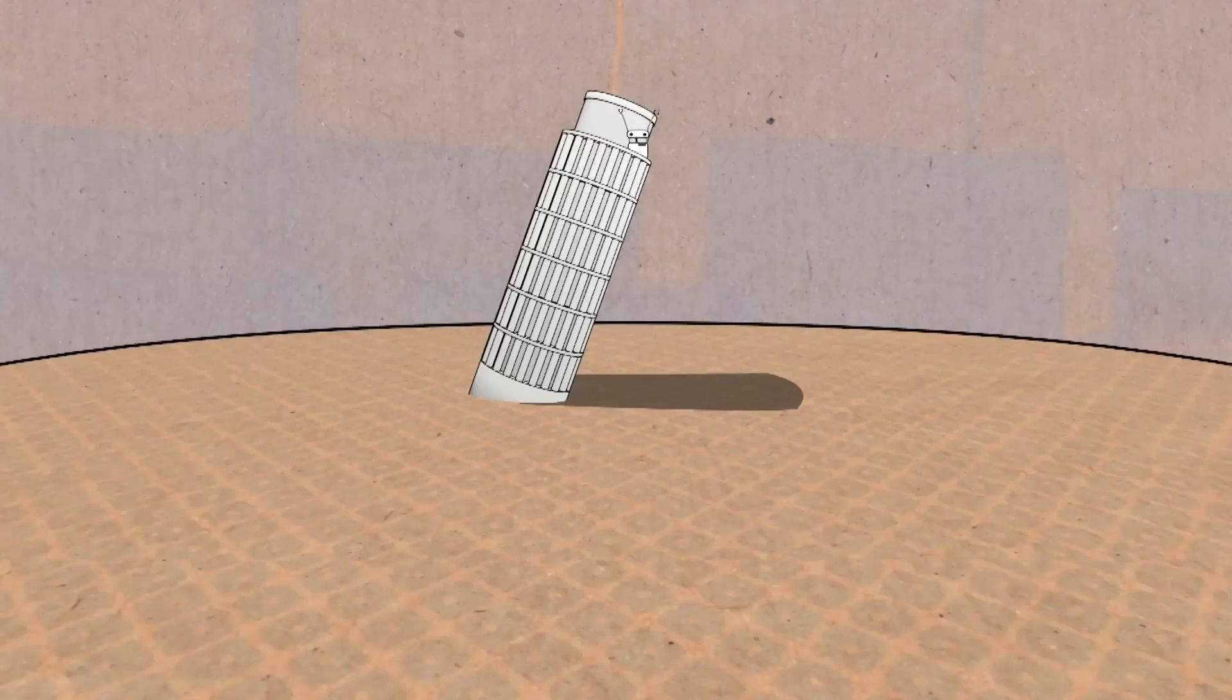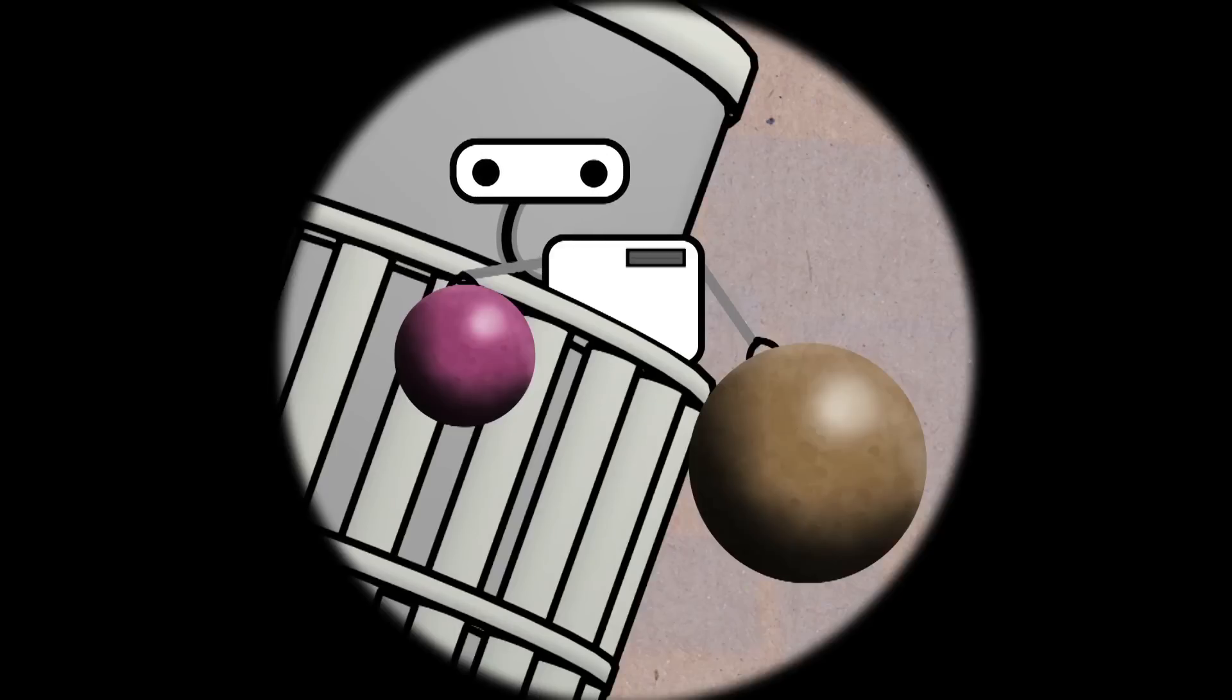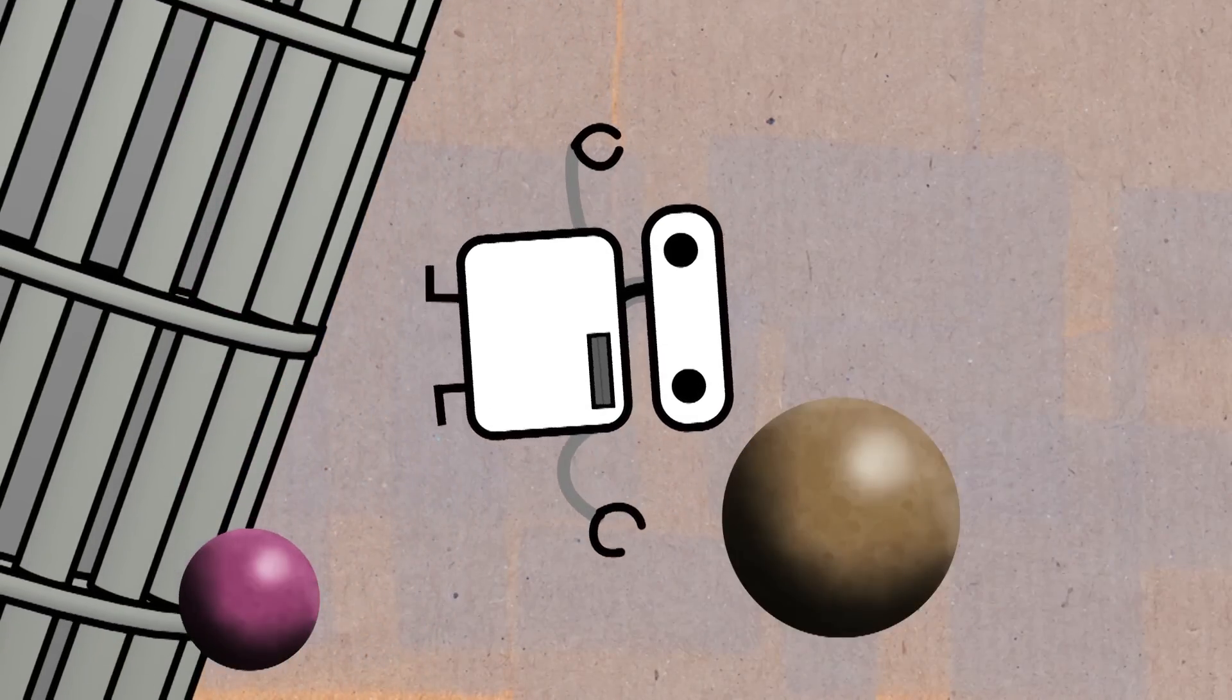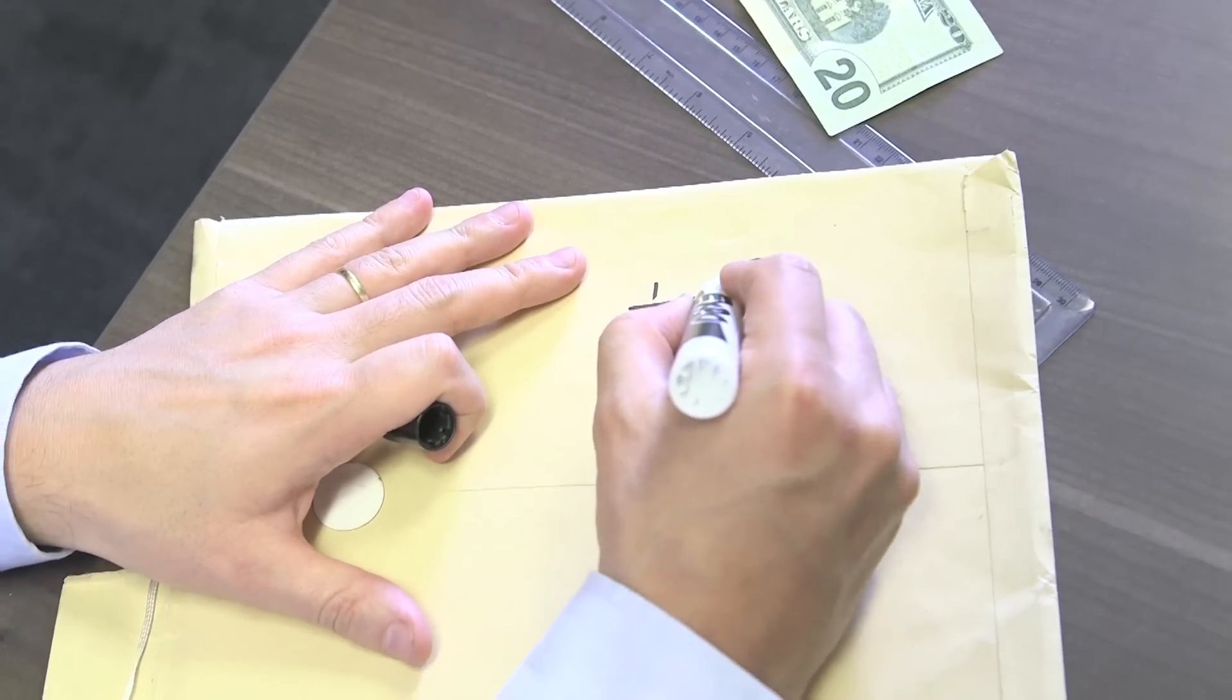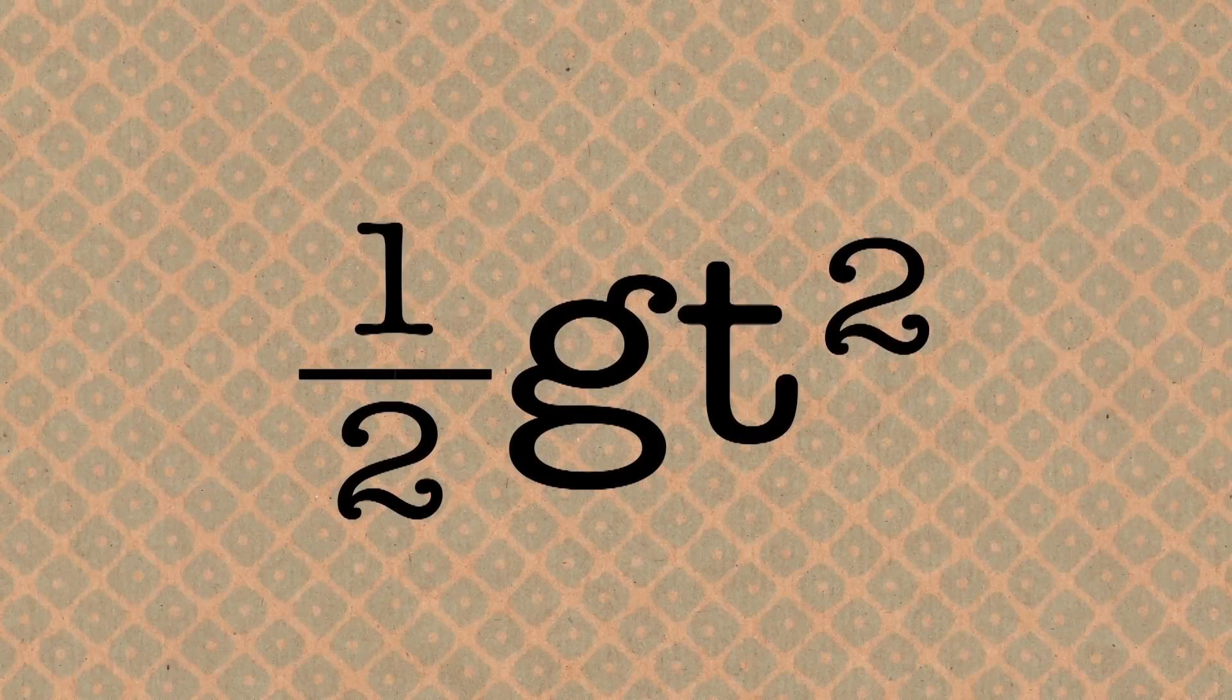It varies from person to person, but approximately 0.2 seconds. We learn in high school and elsewhere that when you drop any object, the stuff falls in free fall over a distance which is equal to half g t squared, where t is the time of the fall and g is the gravitational acceleration.